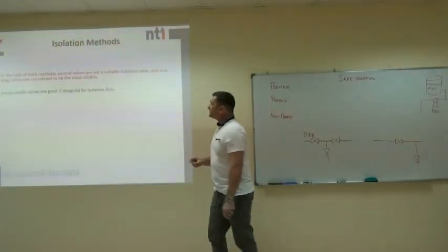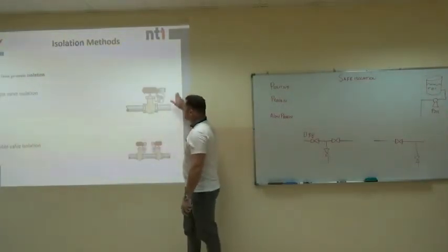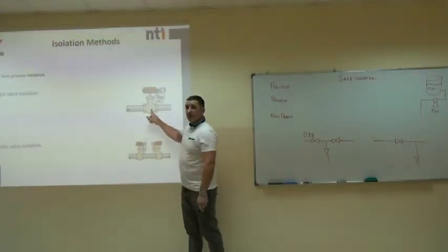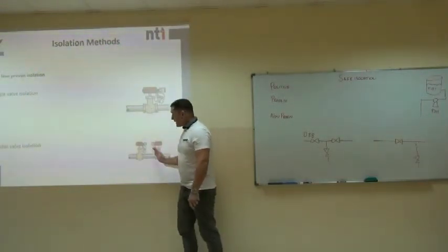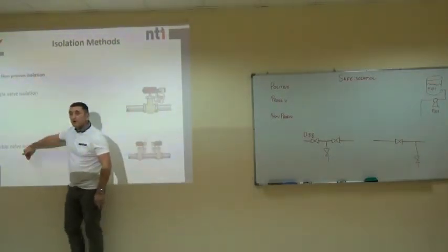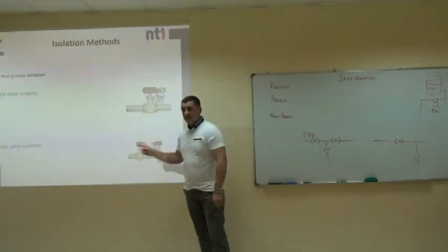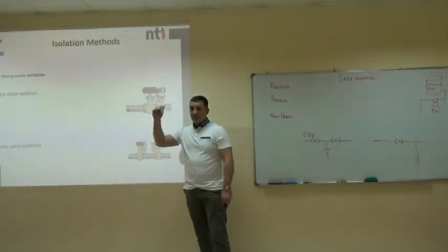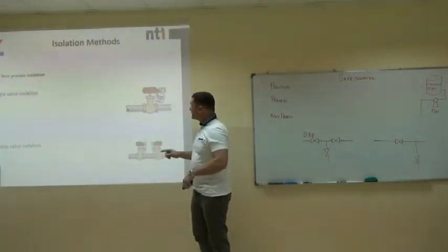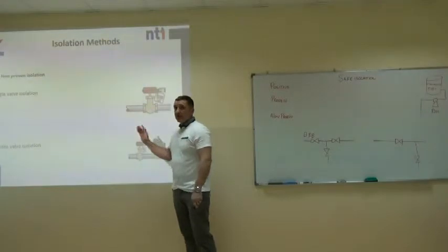The lowest form of isolation is non-proven isolation — that would be just one valve closed. There is no way of proving whether that valve is passing or not. It might be two valves closed, or even ten valves all in a line, all closed — that is still the lowest form of isolation and is very dangerous. So: positive isolation is separation of the line and fitting a flange; proven isolation is double block and bleed or single block and bleed; non-proven is single valve or multi-valve.